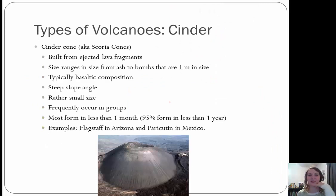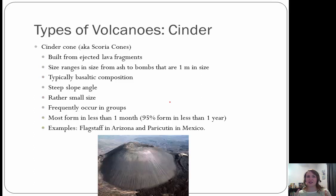Different types of volcanoes: first, cinder cones, also known as scoria cones. These are built from ejected lava fragments. The size ranges from ash to bombs about 1 meter in size. Typically these have basaltic compositions, very steep angles, and are rather small. They normally occur in groups or clusters. Most form in less than 1 month — 95% form in less than 1 year. Examples can be seen in Arizona and Mexico.